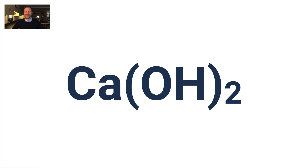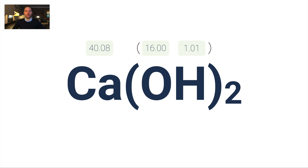Here's another example: calcium hydroxide — Ca(OH)2. This has one calcium, but the parentheses with the subscript 2 means there are two oxygens and two hydrogens. Distributing that 2, calcium is 40.08, oxygen is 16, and hydrogen is 1 — but you double the oxygen and hydrogen values because there are two of each. Adding everything up gives 74.10 grams per mole.